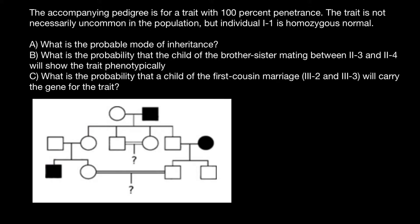Now let's suggest that this is an X-linked dominant genetic disorder. The genotype of this male is going to be a defective X-chromosome and normal Y-chromosome, and two normal X-chromosomes for the female. In this case, this female here is going to inherit the defective X-chromosome from the father's side. She cannot inherit the Y-chromosome, of course, or she would not be female. From the other side, she is going to inherit a normal X-chromosome.